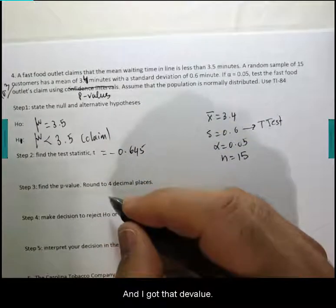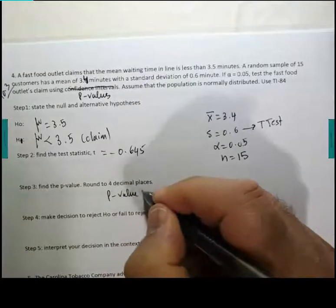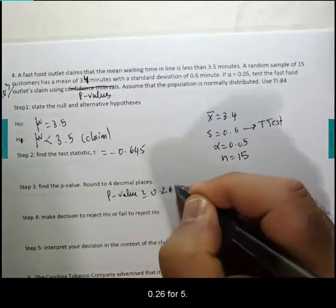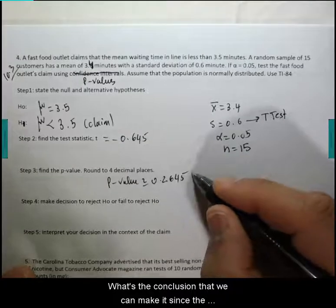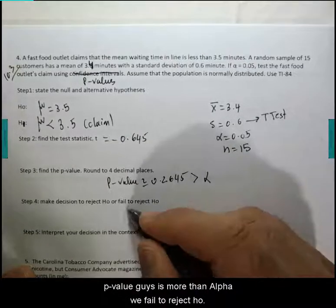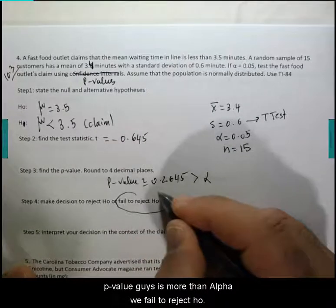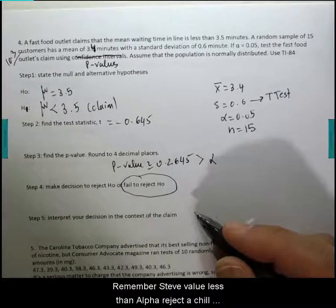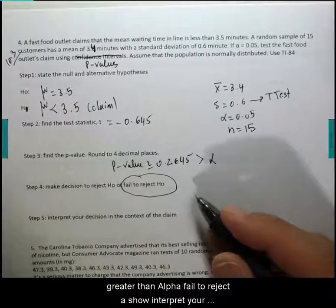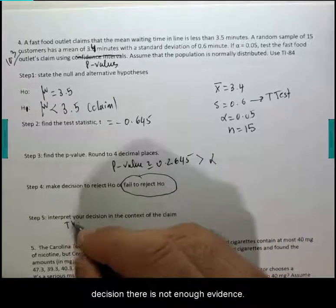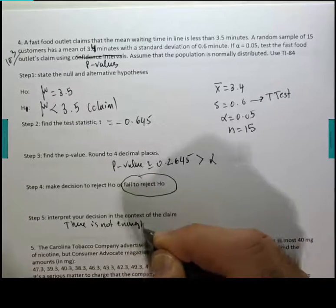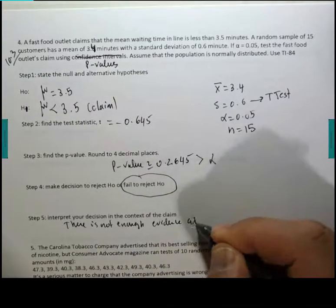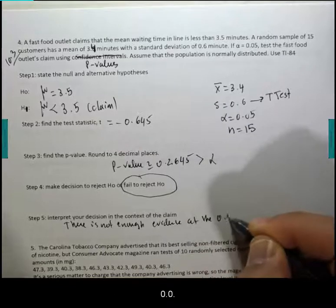What's the conclusion? Since the p-value is more than alpha, we fail to reject H0. Remember: if p-value less than alpha, we reject H0; greater than alpha, we fail to reject H0. Interpret your decision: there is not enough evidence at the 0.05 level of significance.